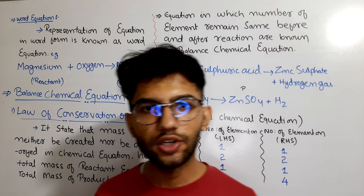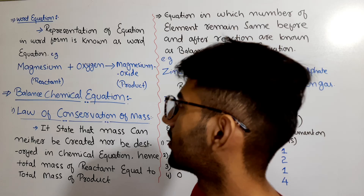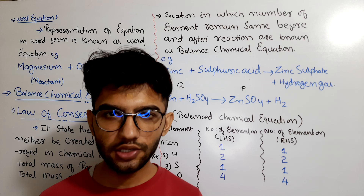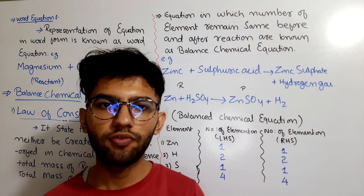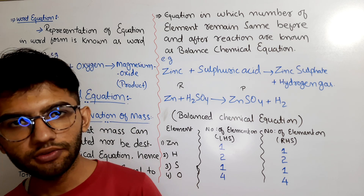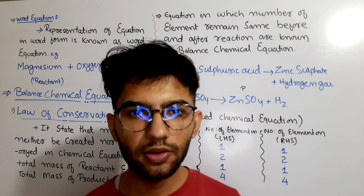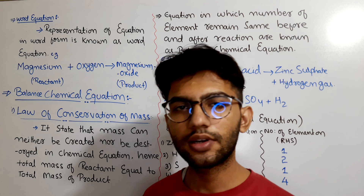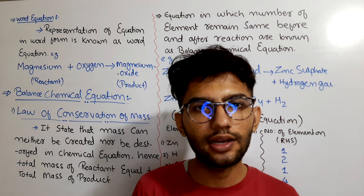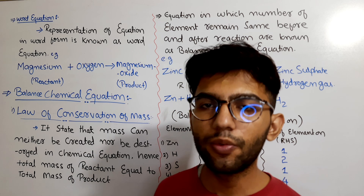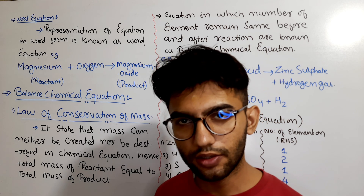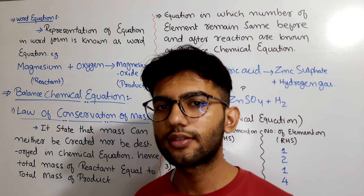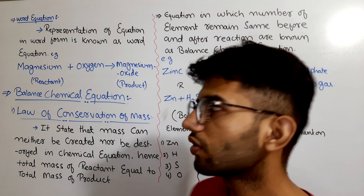Yesterday we continued the topic of chemical reactions — how we represent chemical reactions and what is a chemical equation. The representation of a chemical reaction in simple form is generally known as a chemical equation. It has certain rules: reactants are written on the left hand side, products on the right hand side, and if there are two or more reactants or products, a plus sign is used between them.